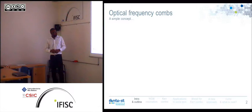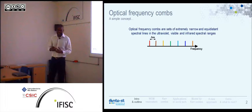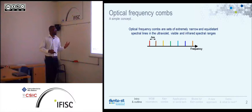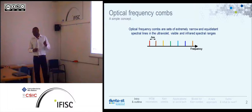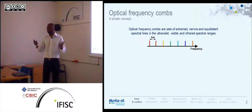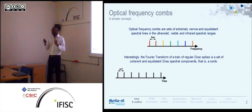When we talk about optical frequency combs, we are talking about an idea that is extremely simple from a purely theoretical point of view. Basically, an optical frequency comb is a set of extremely narrow and equidistant spectral lines in the ultraviolet, visible, and infrared spectral range. When you have a wavelength, you have a color. So an optical frequency comb is a set of colors that are evenly distributed in frequency space.